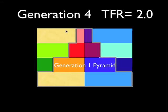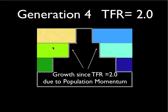Here's the old, original pyramid from four generations ago. All of this space is the growth for the three generations since everybody has agreed to only replace themselves — TRF2. And that's due to population momentum.